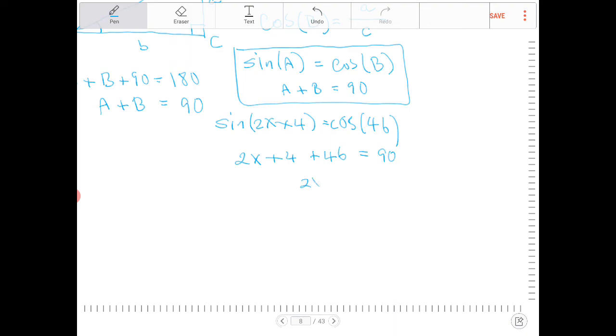Let's combine like terms. I get 2x plus 50 equals 90. Subtract both sides by 50, I get 2x equals 40. Divide by 2, x equals 20.